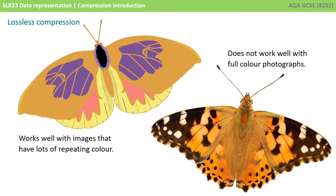Encoding data in this way would reduce the file size, but would only be effective on images with large areas of continuous similar colours. That makes it suitable for cartoons and clip art, but ineffective with full colour photographs where there are few blocks of repeating colours.